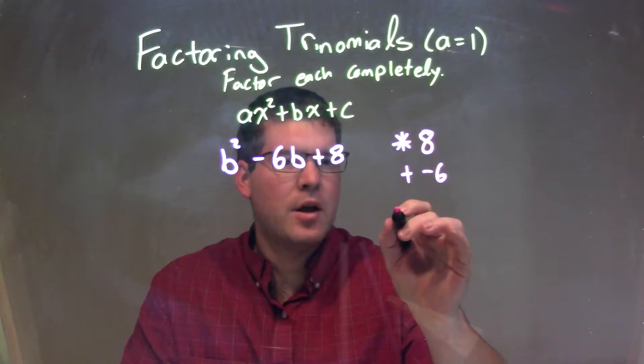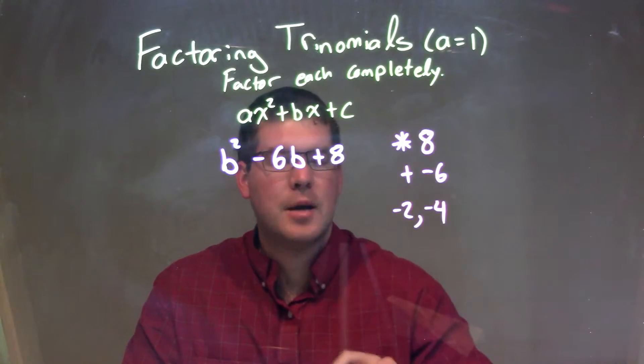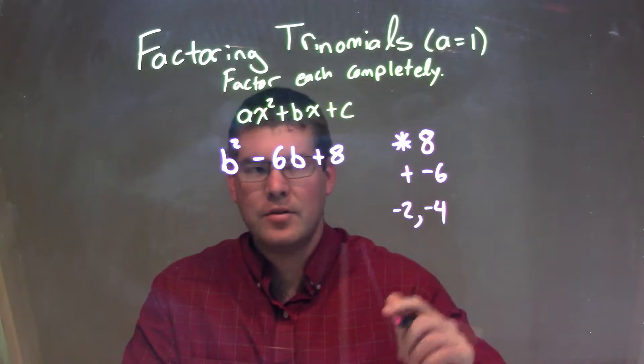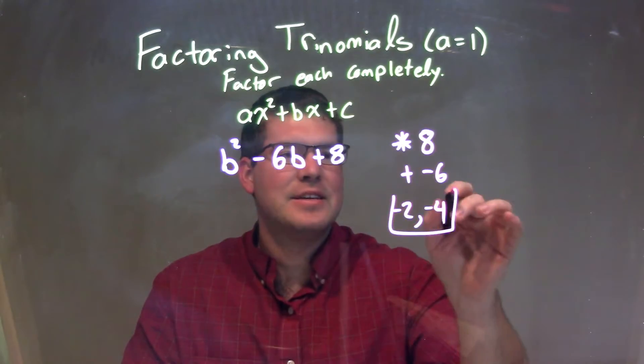And the ones I'm thinking of are a negative 2 and a negative 4. Negative 2 times negative 4 is a positive 8, but a negative 2 plus a negative 4 is a negative 6.